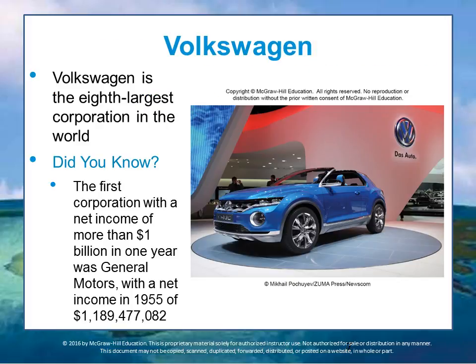One example corporation is Volkswagen — it's the eighth largest corporation in the world. Did you know that the first corporation with a net income of more than one billion dollars a year was General Motors, with a net income in 1955 of one billion, one hundred and eighty-nine million, four hundred and seventy-seven thousand, and eighty-two dollars? Quite an achievement — the first billion-dollar profit company.